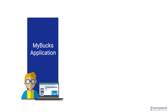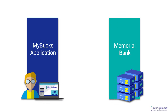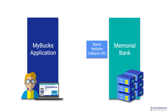In order for all of this to work, though, John needed to register his MyBucks application with the Memorial Bank API service. Independent of any user involvement, John needs to provide the API with MyBucks' name, website, and the URL to which the Memorial Bank authorization screen will redirect the user after they have authorized access to their account.